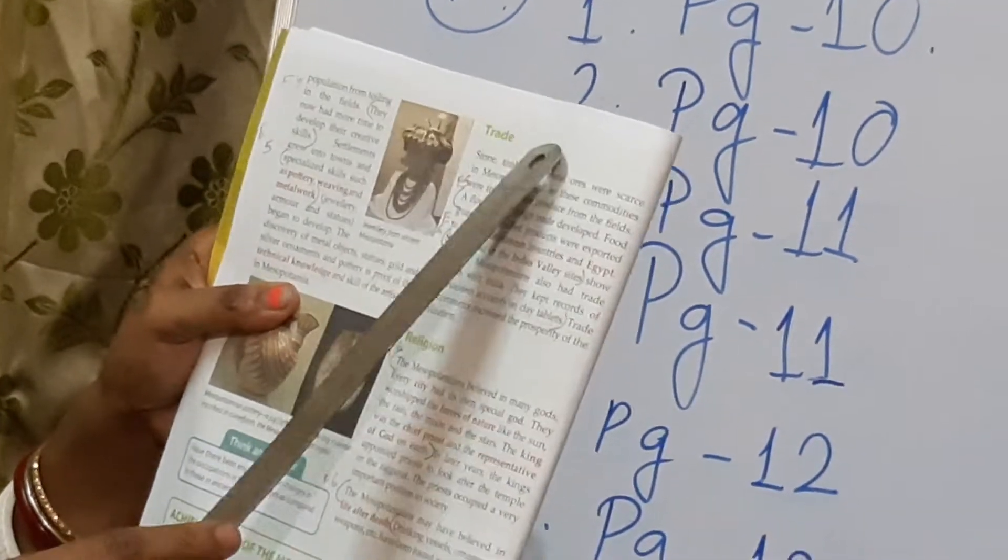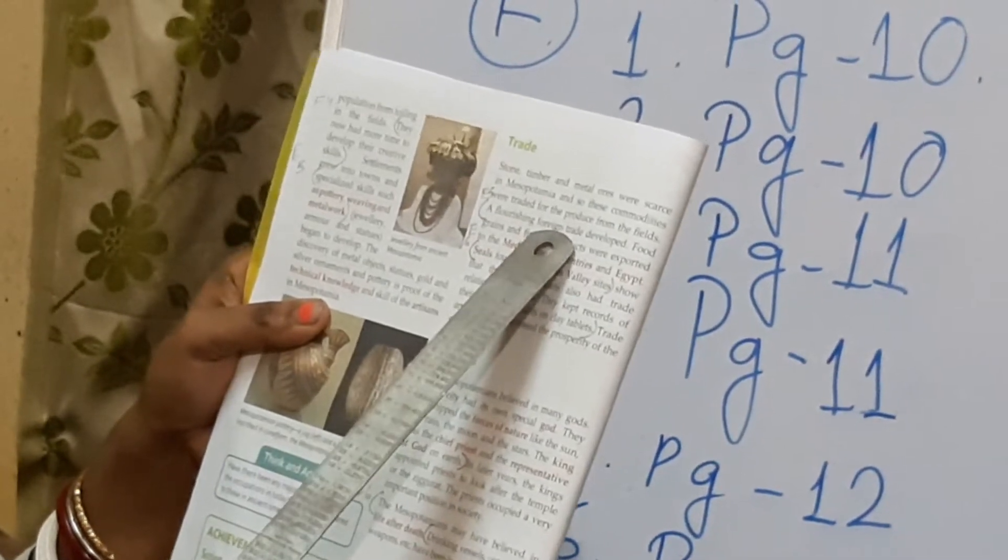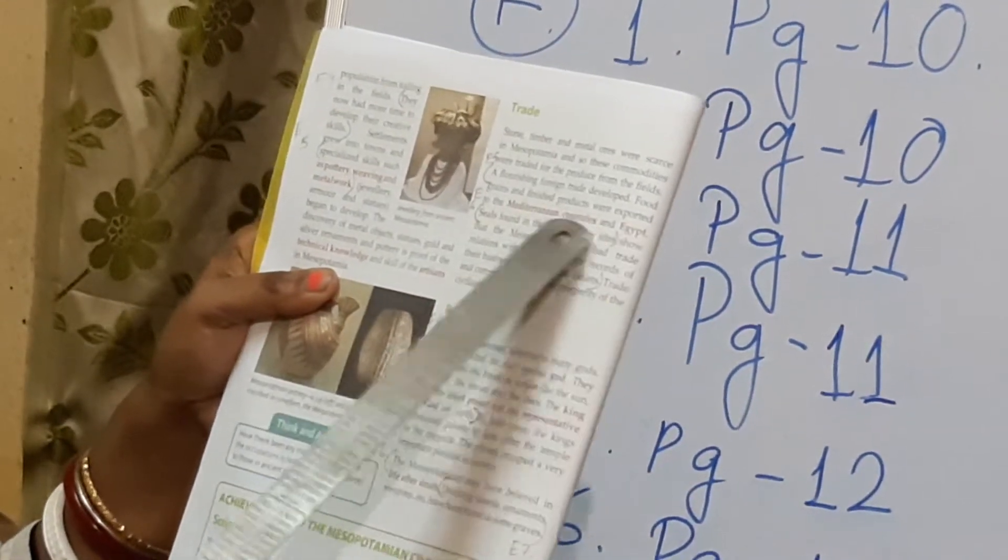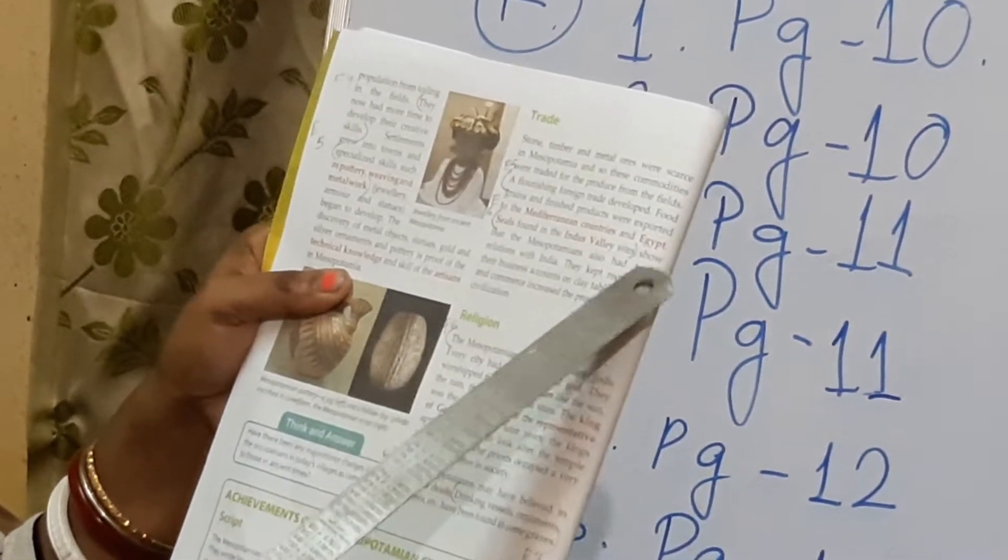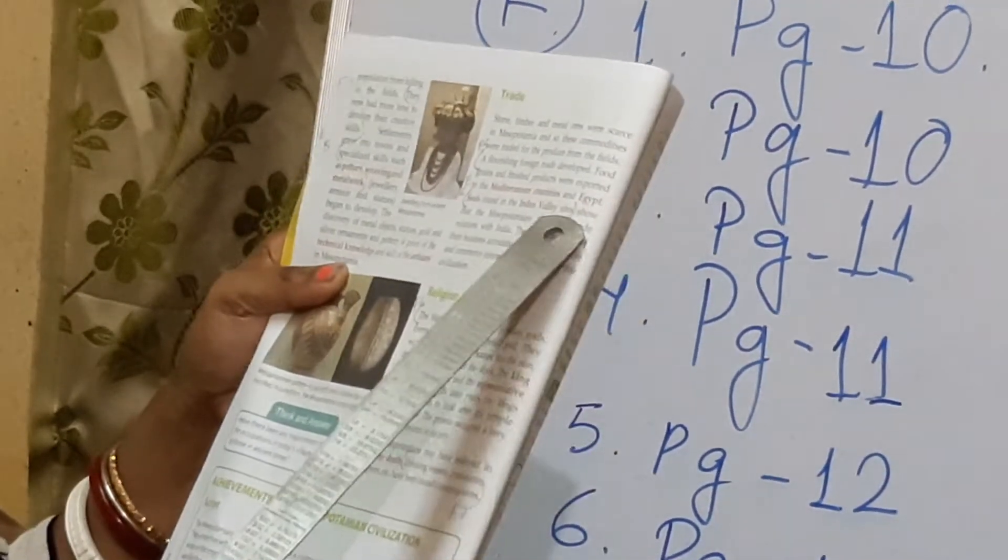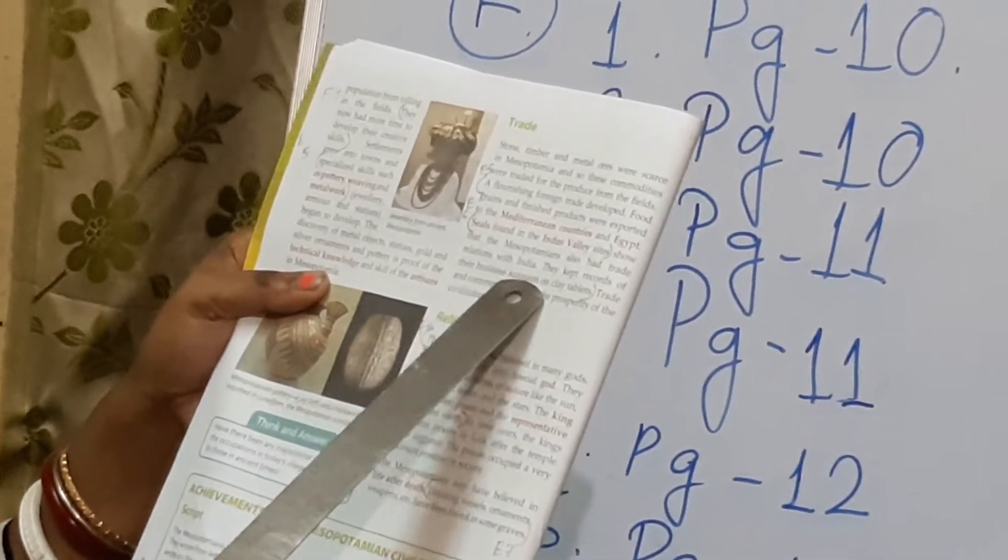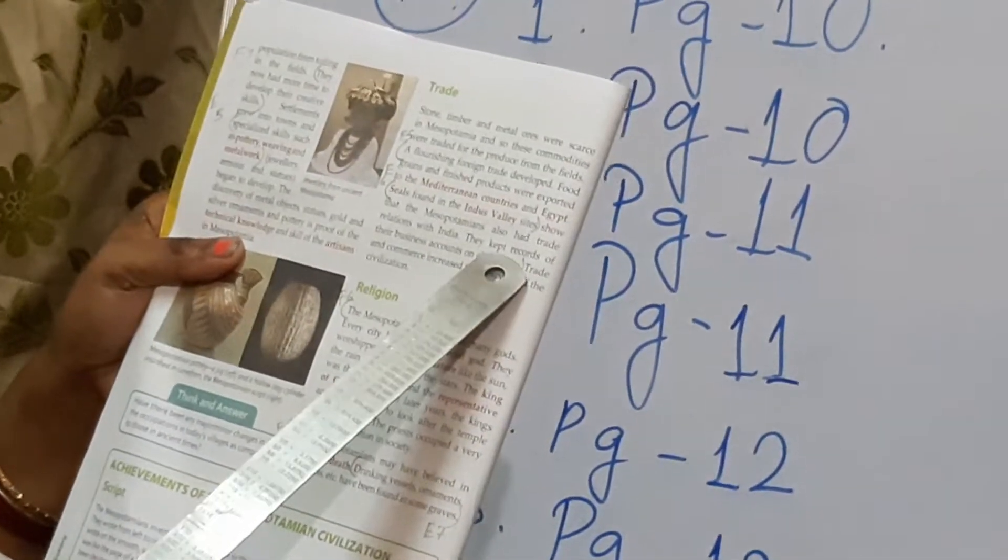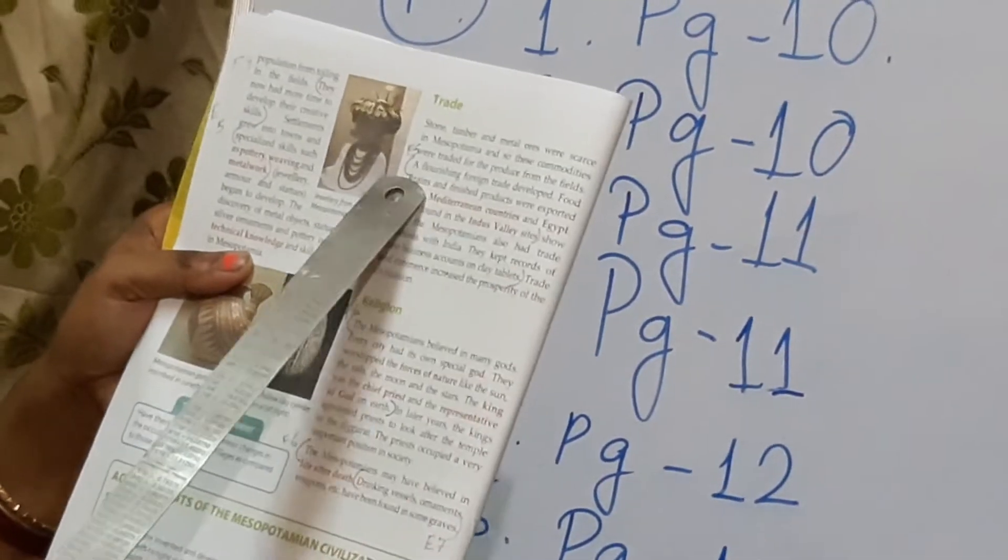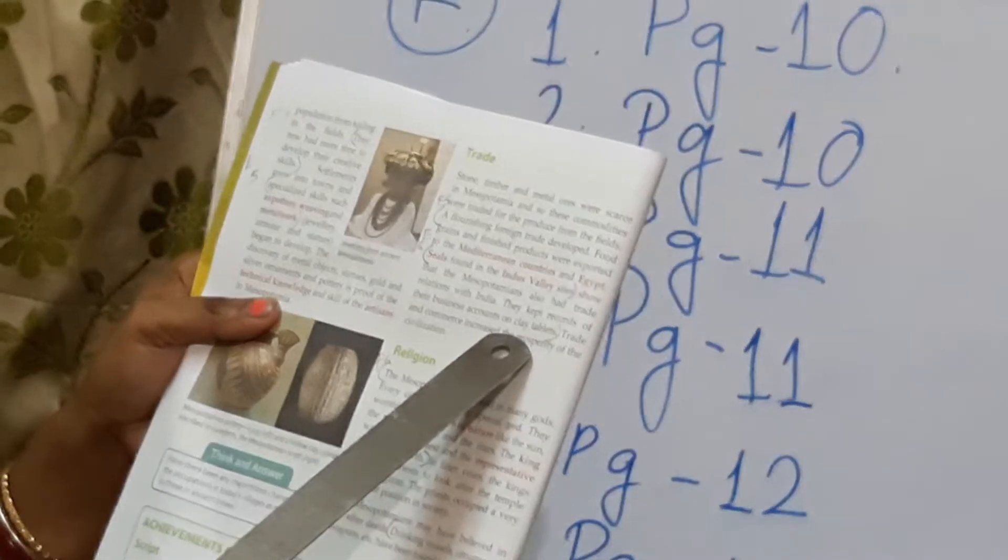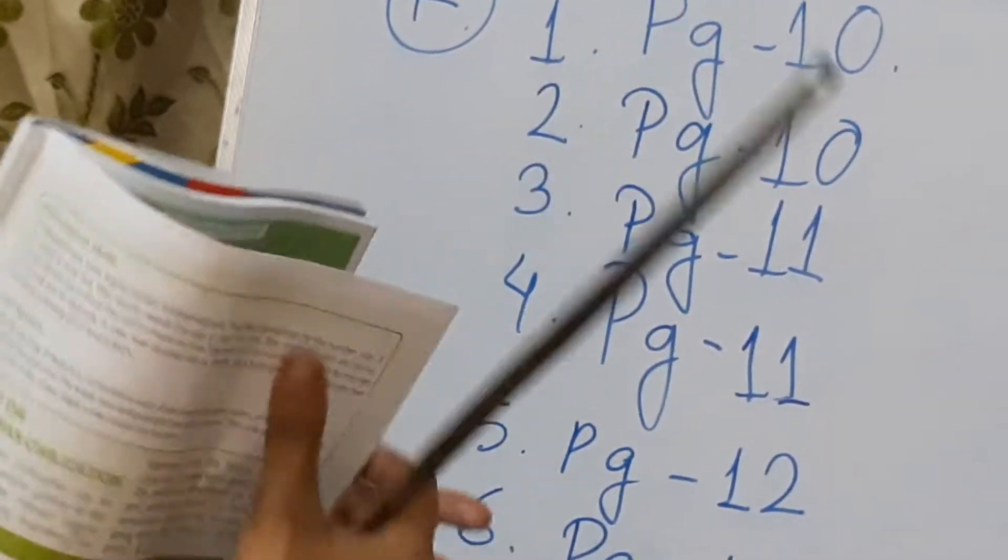Page number 12 open. So under the trade heading, you can see under the trade heading. Here, a flourishing foreign trade - from there you will start writing. A flourishing foreign trade developed. Food, grains and finished products were exported to the Mediterranean countries and Egypt. Seals found in Indus Valley sites show that the Mesopotamians also had trade relations with India. They kept records of their business accounts on clay tablets. Up to clay tablets you will write. So starting from a flourishing trade ending till clay tablets. This is the answer for question number 5.